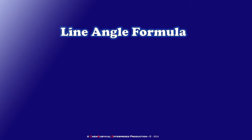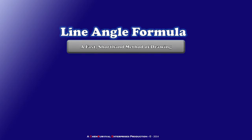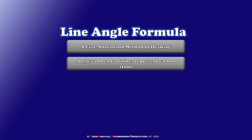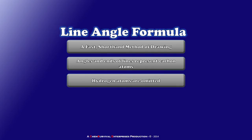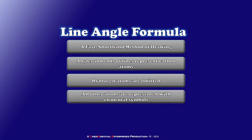Next, let's talk about the line angle formula — a fast shorthand method chemists use when having a conversation or working on the blackboard. Angles and ends of lines all represent carbon atoms within the molecule. Hydrogen atoms are omitted and the chemist mentally fills them in. All other atoms are represented by their elemental symbols. This gives us a very quick way to draw relatively complicated molecules with just a few strokes of a pencil.